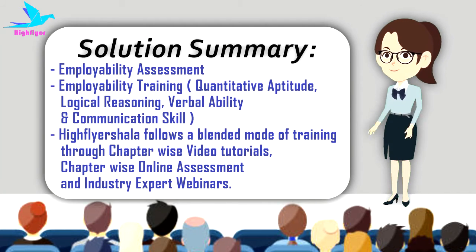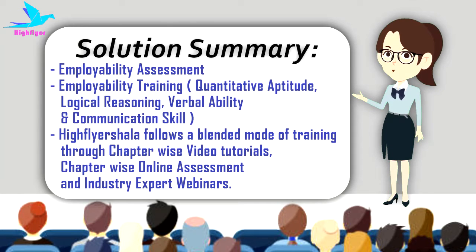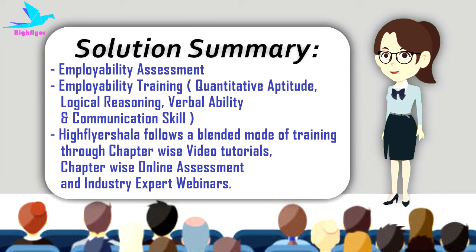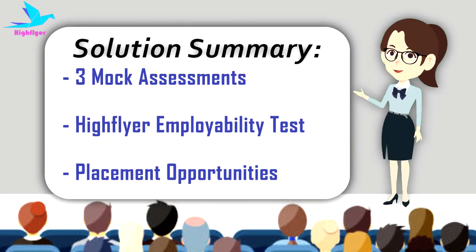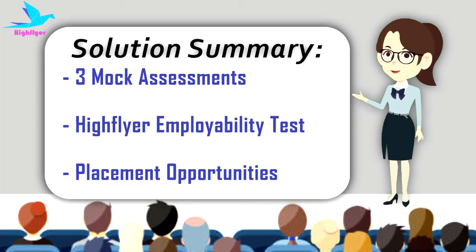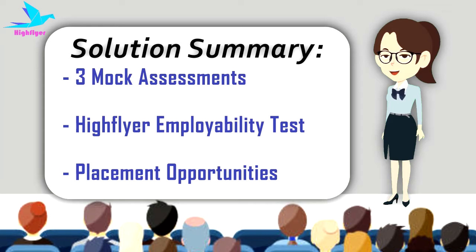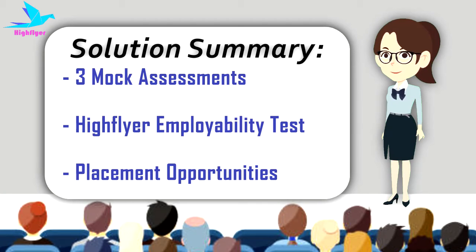The student gets e-learning videos of each chapter followed by an online assessment. During the training, not only does he get concept-clearing videos but he is also taken through 2,000 plus questions. After completing the training modules, he goes through three mock assessments, fully preparing himself for the job. Finally, the student gives the High Flair National Employability Test, and depending on the scores, the student is offered a job through our recruiters network.